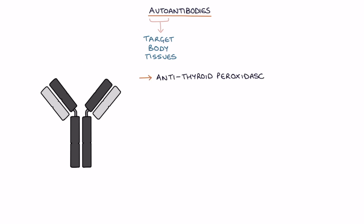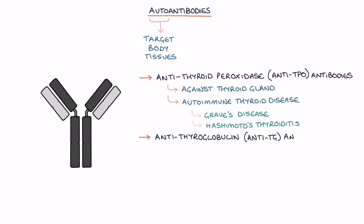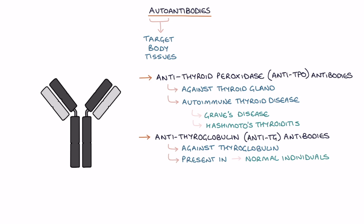Antithyroid peroxidase, or anti-TPO, antibodies are antibodies against the thyroid gland and are the most relevant thyroid autoantibody in autoimmune thyroid disease. Antithyroglobulin, or anti-TG, antibodies are antibodies against thyroglobulin, which is a protein produced and extensively present in the thyroid gland. They can be present in normal individuals without thyroid pathology.